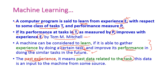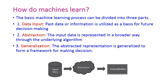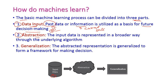Past experience means the past data related to the same task. For the same task, the data coming from different sources is called past experience. Machine learning is divided into three parts. The first is data input — the data may be past data or present information taken from the current state. The data used for future decision making is the input data, which is the first phase.